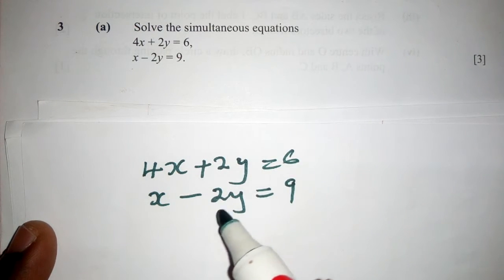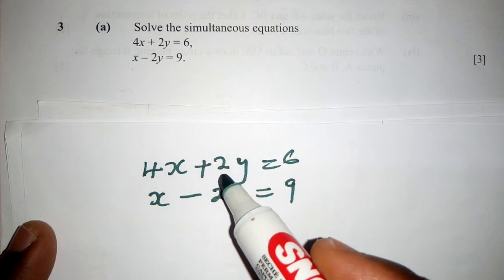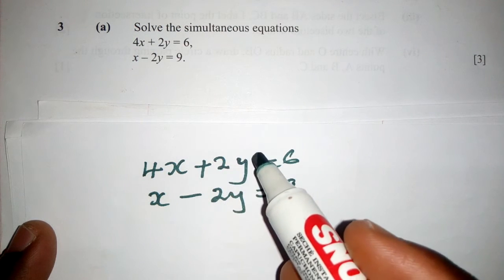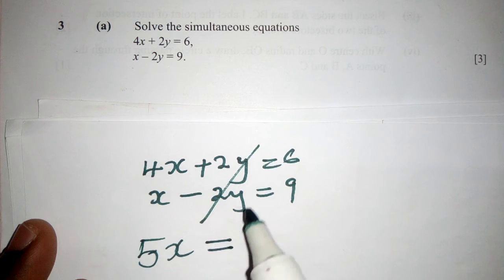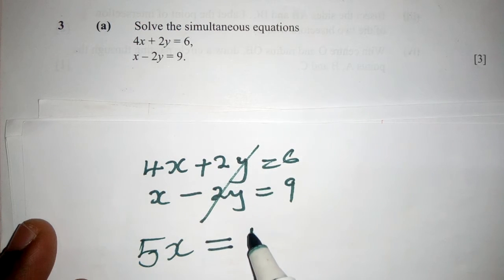So what we do here, if you're able to see properly, we can cancel here. So we cancel, and then we have, this is 5x is equal to, when we add, we have 15.